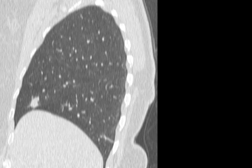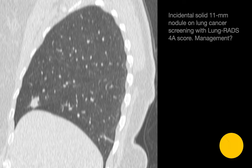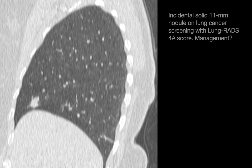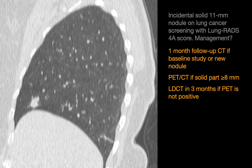You observe a solid 11-millimeter right middle lobe lung nodule on a baseline lung cancer screening CT, for which you assign a Lung RADS 4A score. What would be the recommended management in this scenario? Recommended management options for a Lung RADS 4A score are a one-month follow-up CT if the nodule is being encountered for the very first time and you believe it might be infectious or inflammatory, PET CT if the solid part is at least 8 millimeters in size, and LDCT in 3 months if the PET is not positive.